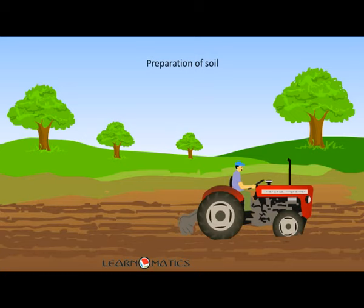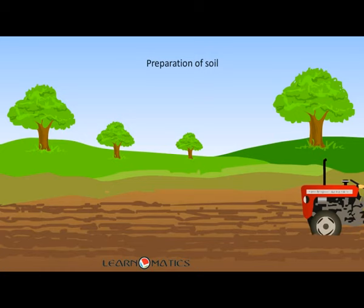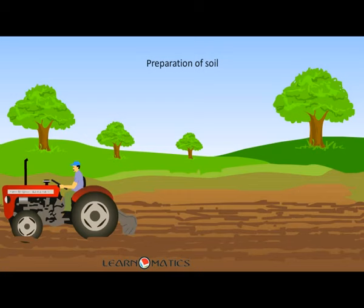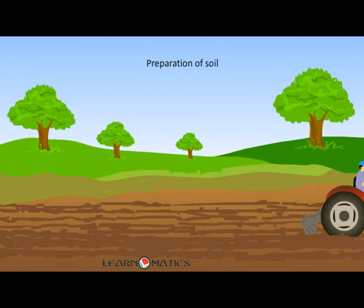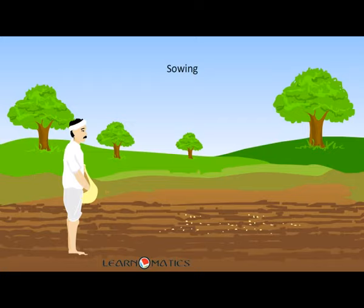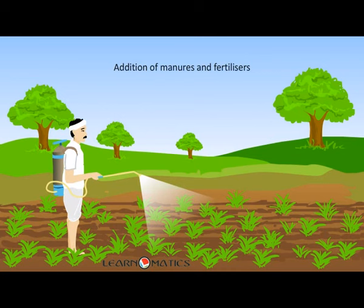The first step is the preparation of soil. This method usually involves loosening and tilling of the soil. This allows the roots to penetrate deep into the soil and helps in the growth of microbes and earthworms that enrich the soil with essential nutrients. It also brings the nutrient-rich soil to the top.